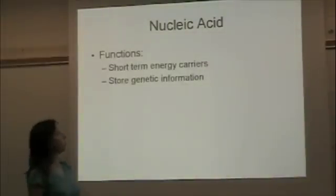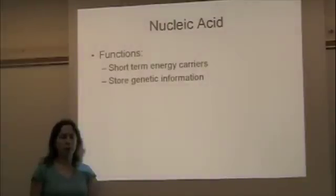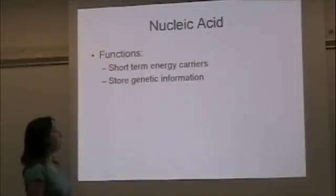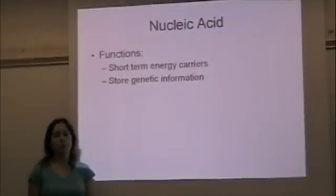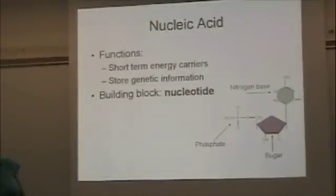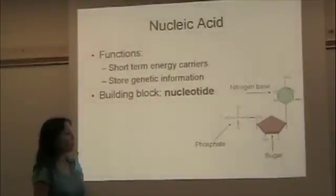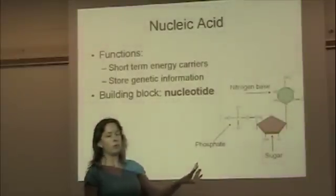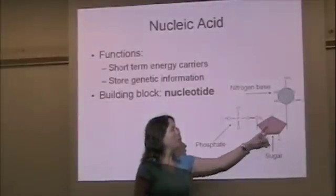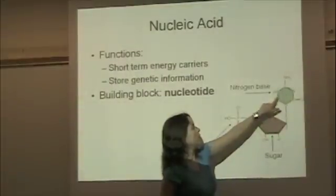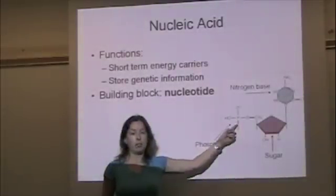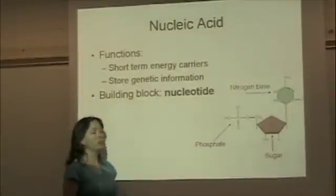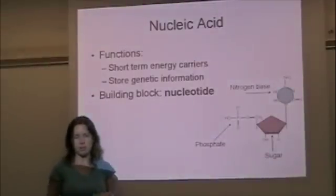The last group of organic compounds are the nucleic acids, which we'll discuss in more detail later in the semester. They function as energy carriers and are important for storing our genetic information. The basic structure of the nucleic acid is composed of many nucleotides. A nucleotide has three main components: a five-carbon sugar, a nitrogen base usually in a ring, and a phosphate. The phosphate is the key distinguishing feature — it's the only building block we've discussed that contains phosphate, so that's what to look for when identifying a nucleic acid.